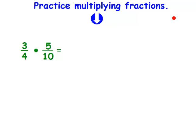3 fourths times 5 tenths. I multiply across. 3 times 5 is 15. 4 times 10 is 40. First, I'm going to see if I can simplify this answer. First, I write down the numerator. And then I write down the denominator.